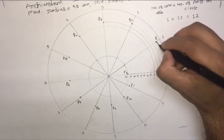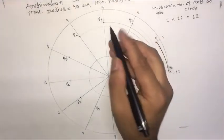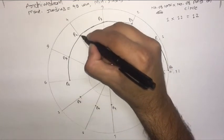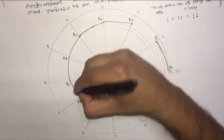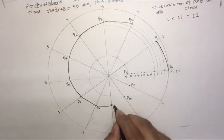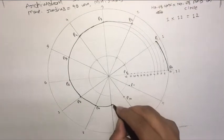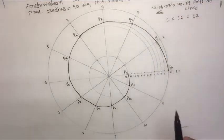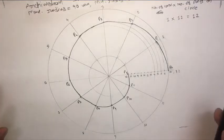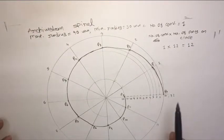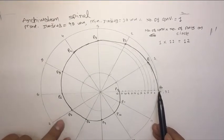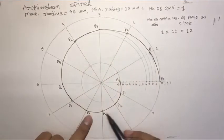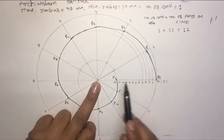Connect all these points by free-hand sketch or with the help of a French curve, whichever you find easy. I always prefer free-hand sketching. So that's all about the Archimedean spiral. This moving point P has started its journey from 90mm distance from the centre and has ended its journey at the distance of 30mm from the centre. So maximum radius is 90mm and minimum radius is 30mm.